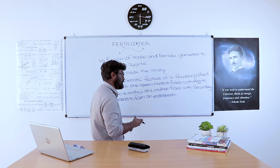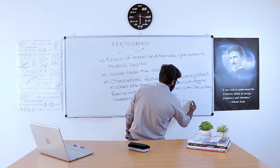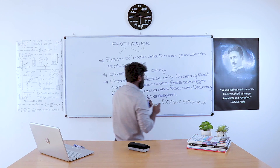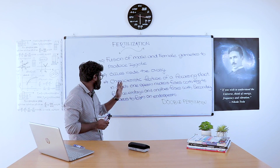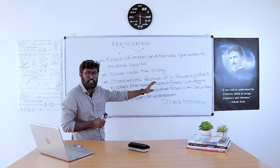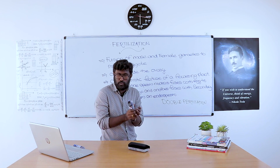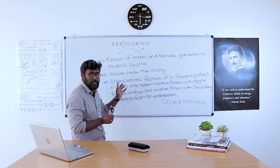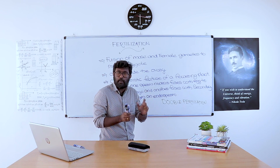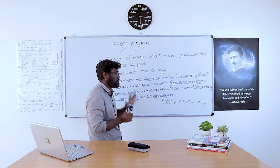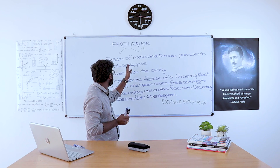Now we want to discuss about double fertilization. Double fertilization is a characteristic feature of a flowering plant in which one sperm nucleus fuses with an egg to form an embryo, and another sperm nucleus fuses with the secondary nucleus to produce an endosperm. This is called double fertilization.